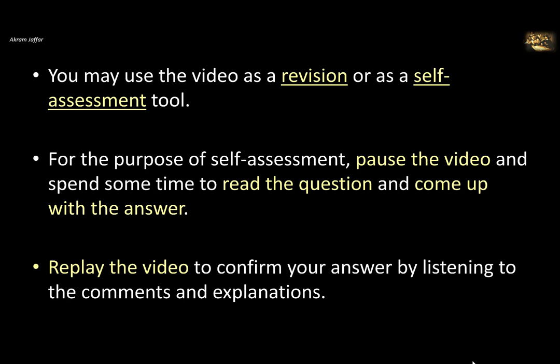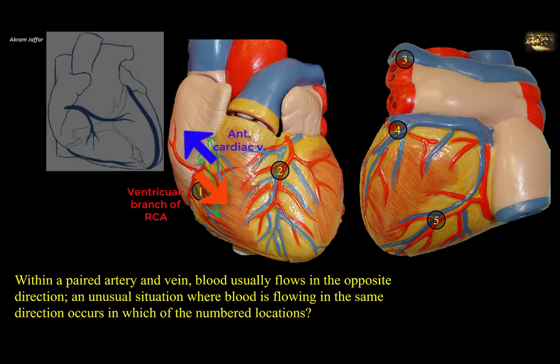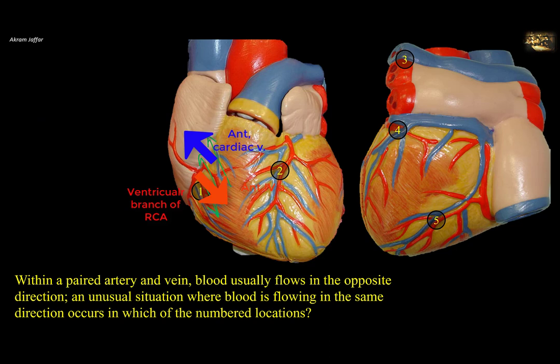Replay the video to confirm your answer by listening to the comments and explanations. With an impaired artery and vein, blood usually flows in the opposite direction. An unusual situation where blood is flowing in the same direction occurs in which of the numbered locations. First, we have to identify the arteries and the accompanying veins. The artery in location 1 is a ventricular branch of the right coronary artery that supplies the right ventricle. It is accompanied by an anterior cardiac vein, which drains into the right atrium — one of the exceptions where venous blood drains directly into the right atrium and not into the coronary sinus. So location 1 has the artery and vein carrying blood in opposite directions.